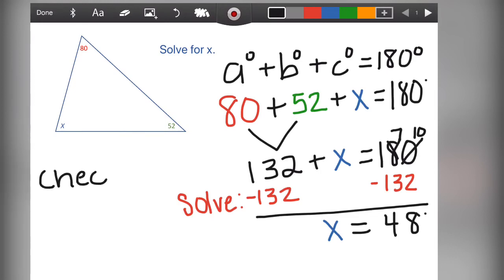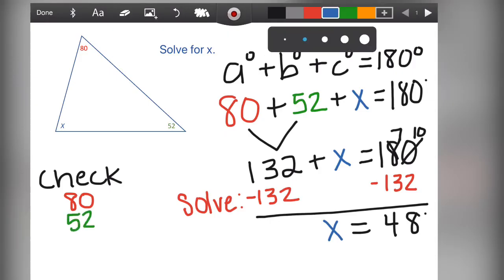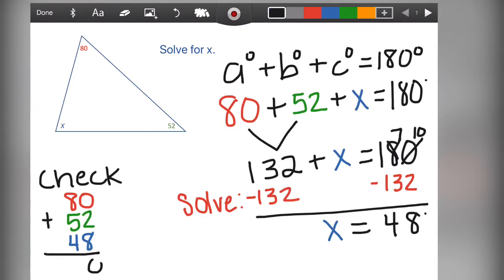But we should always check our answers. Remember the theorem says if we add all three together, we should get 180. So let's add what we know. The 80 plus the 52 plus the 48 we got for X totaled up should check out to total 180 degrees. And if so, we know we did the problem correctly. Yay!